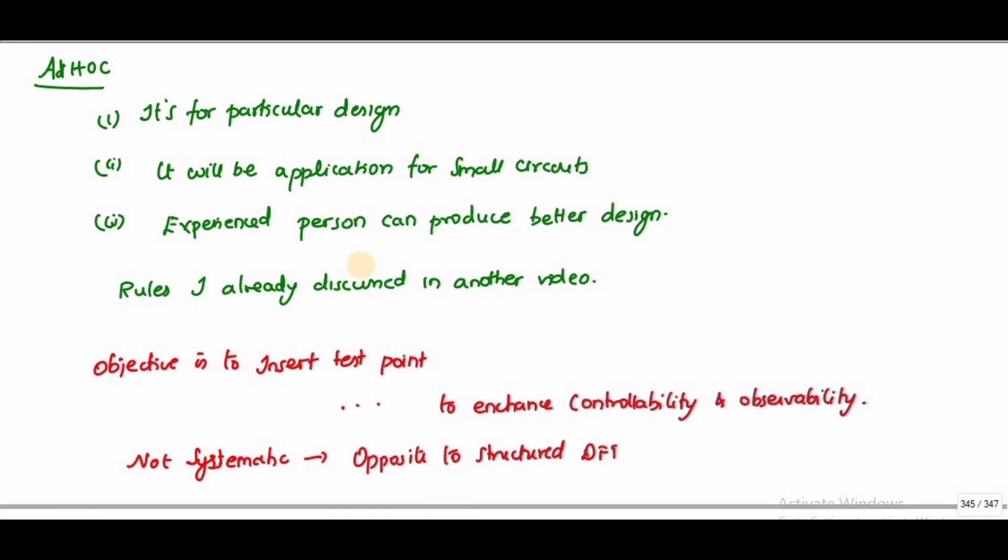In combinational circuits, if there are n inputs, we require 2^n patterns. Suppose n equals 20, we require over 1 million patterns to test any faults. If a single pattern takes 1 microsecond, the total time to test the entire module takes 1 second.